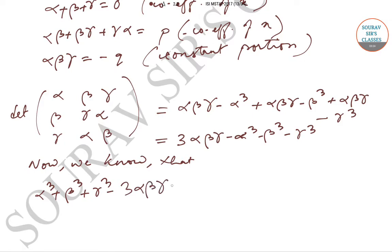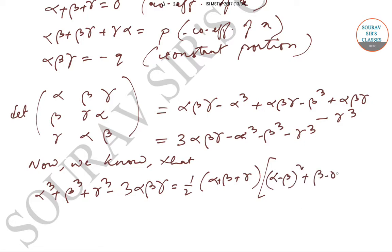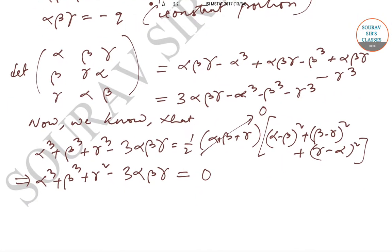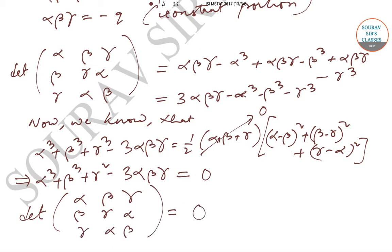Since alpha plus beta plus gamma equals zero, the identity gives us alpha³ plus beta³ plus gamma³ minus 3·alpha·beta·gamma equals zero. This implies that the value of the determinant — with rows alpha, beta, gamma; beta, gamma, alpha; and gamma, alpha, beta — equals zero. So option D is the correct answer.